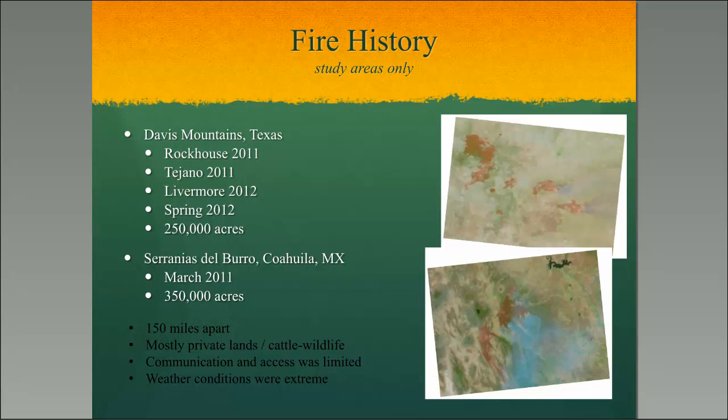We'll talk a little bit about the fire history. We're only addressing two areas and will not be addressing the Bastrop fires. Many of you remember what happened in 2011. The first study area was the Davis Mountains, where a series of four fires took place over two years: the Rock House and the Tejano Fire in 2011, and the Livermore and Spring Fires in 2012, comprising about 250,000 acres. The second study area is the Serrania del Burro in Coahuila, Mexico, where fires in March of 2011 burned 350,000 acres.